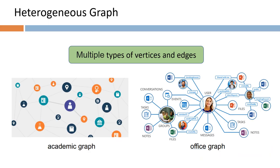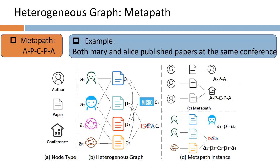Heterogeneous graphs consisting of multiple types of vertices and edges are more common in real life than homogeneous graphs, yet they have received little attention from computer architecture. There is a very important concept in heterogeneous graphs: an ordered sequence of vertex types describes the complex relationships among vertices. Most prevalent heterogeneous graph neural networks capture information based on metapath.